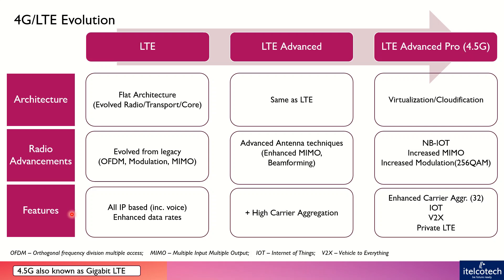In terms of features, LTE by default is an all-IP based ecosystem. From basic LTE or release 8, data rates of 100 Mbps could be achieved without any advanced antenna techniques in a 20 MHz bandwidth. We'll discuss these calculations later, but here we are adding new carriers to increase throughput, and adding new functionality such as vehicle-to-everything or private LTE to add more value to the 4G ecosystem.